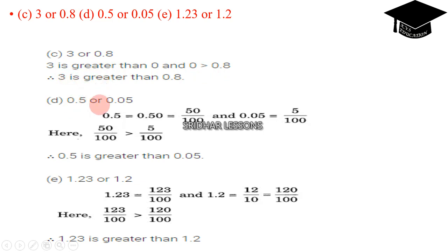Next, 0.5 or 0.05? 0.5 is equal to 0.50, that means 50 by 100, and 0.05 is 5 by 100. Check out these denominators. 50 by 100 is greater than 5 by 100. Therefore 0.5 is greater than 0.05. Observe carefully, my dear students.